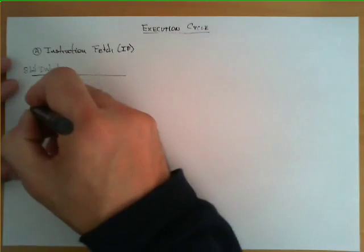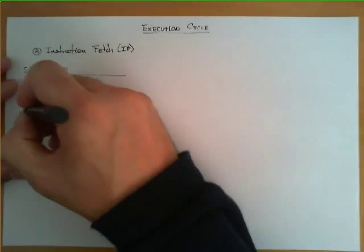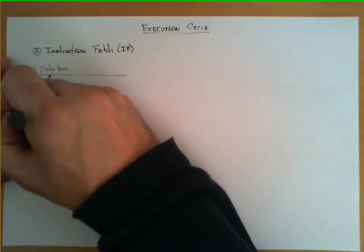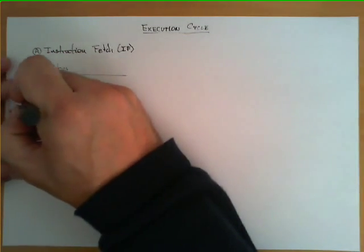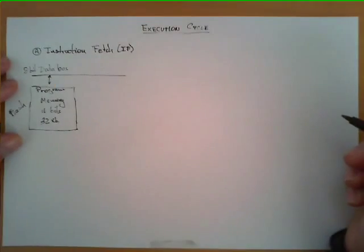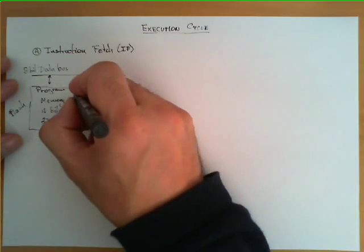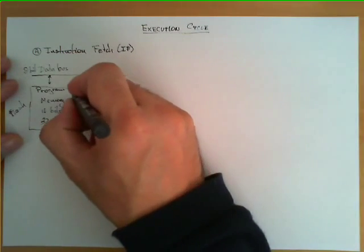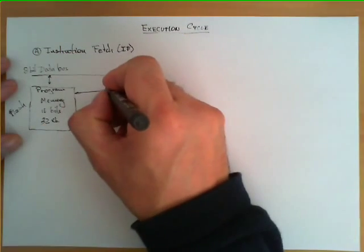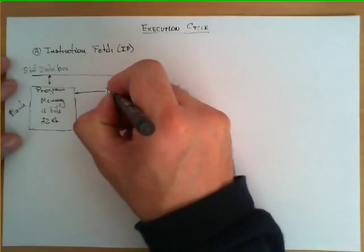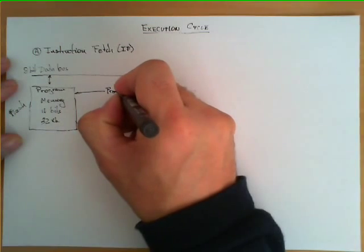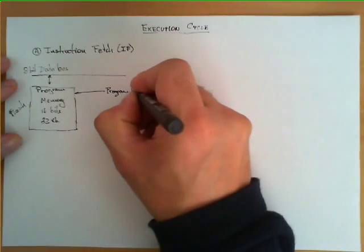Now this program memory, which by the way is a flash memory, is accessed using as address the value of the register called the program counter.